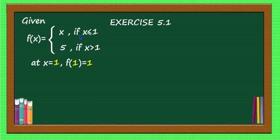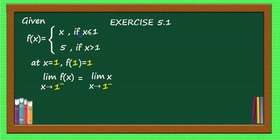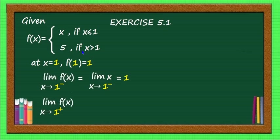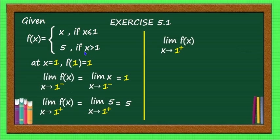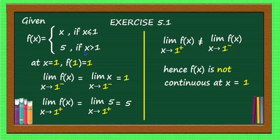Now find the limit as x → 1 of f(x). Near x = 1 the function is defined differently on each side, so we take one-sided limits. The left-hand limit: as x → 1⁻, f(x) = x, so the limit equals 1. The right-hand limit: as x → 1⁺, f(x) = 5, so the limit equals 5. Since the left and right limits are not equal, f(x) is not continuous at x = 1.